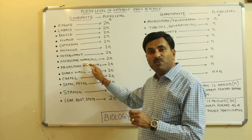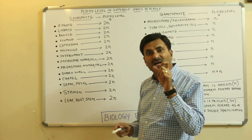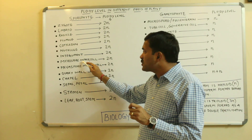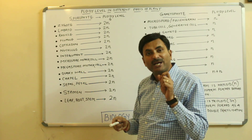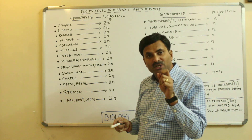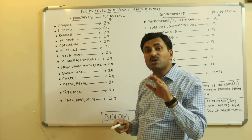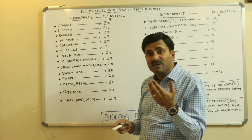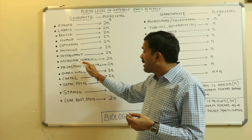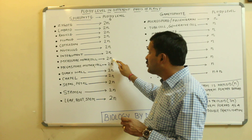Now, microspore mother cell. The anther has microsporangia, and inside the microsporangium the microspore mother cell is found. The microspore mother cell is always diploid because it undergoes meiosis and later forms microspores. So the microspore mother cell present in the microsporangium always has the ploidy level of 2N.